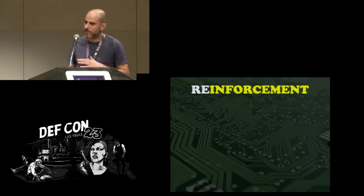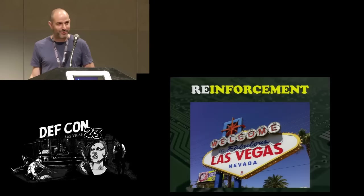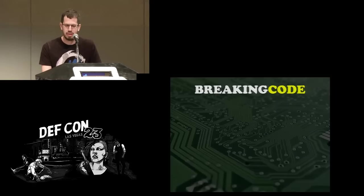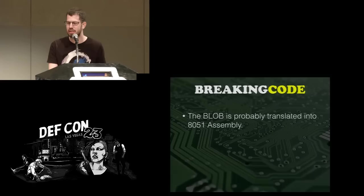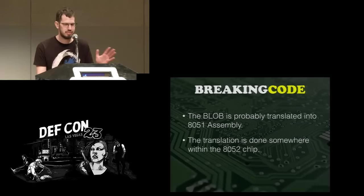I'm not a big code breaker, but I do know one really good code breaker — his name is Lior. He's a bit mad, but that's okay. I went to his office and gave him a big promise of a Vegas ticket, and got him to join the project. So let's do a quick recap of what we already know. This blob is somehow translated into 8051 assembly — that's our assumption — and this translation is happening somewhere inside this 8052 chip. All we need to do is somehow break this obfuscation. Importantly, it's not encrypted and it's not compressed, so it's some sort of an obfuscation scheme.